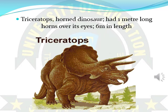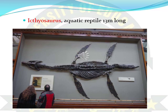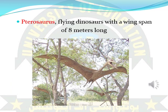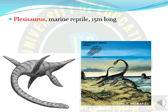Here you can see the next dinosaur member called Triceratops, also called the Horned Dinosaur. They had approximately 1-meter-long horns covering their eyes, and the length of these animals was about 6 meters. Here you can see the Plesiosaur, also called an Aquatic Reptile, with a body length of about 13 meters. In this slide, you can see a bird-like dinosaur called a Flying Dinosaur, with a wingspan of about 8 meters.